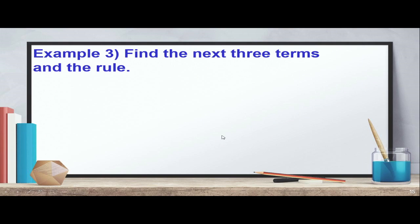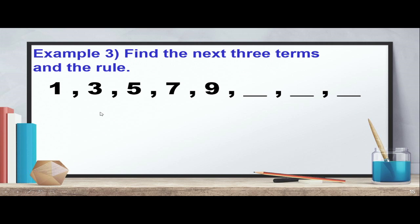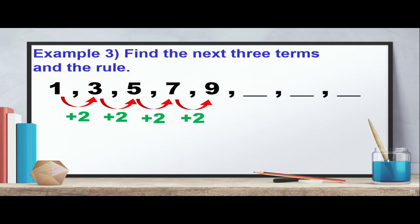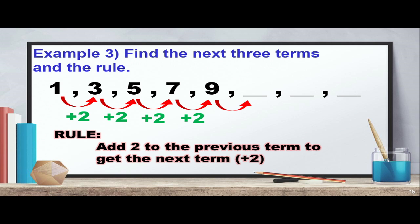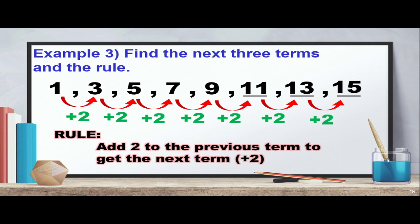Example 3: find the next three terms and the rule for 1, 3, 5, 7, 9. The common difference is 2: 1+2=3, 3+2=5, 5+2=7, 7+2=9, 9+2=11, 11+2=13, 13+2=15. The rule is: add 2 to the previous number to get the next term.